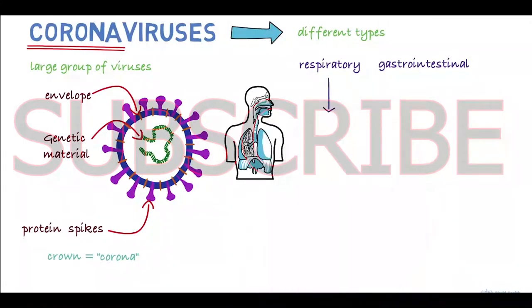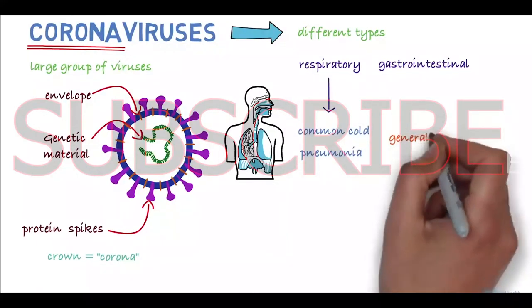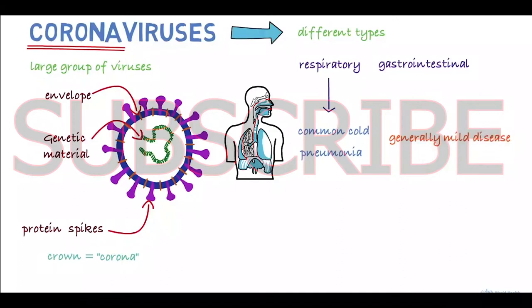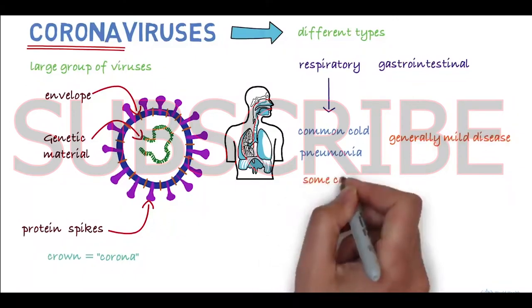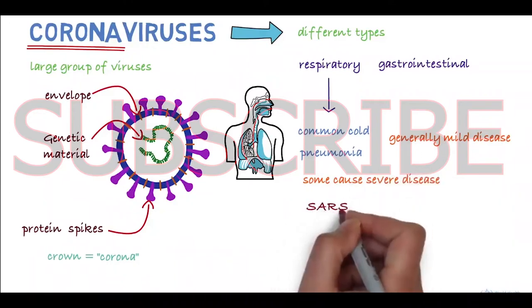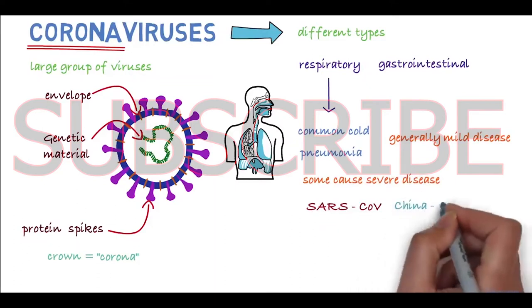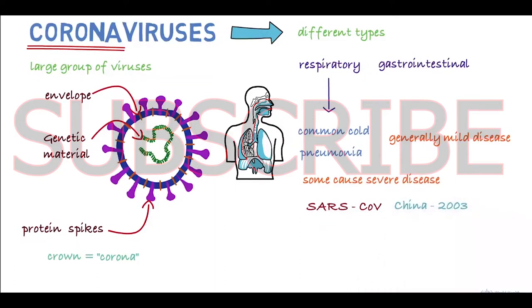Respiratory disease can range from the common cold to pneumonia, and in most people the symptoms tend to be mild. However, there are some types of coronaviruses that can cause severe disease. These include the severe acute respiratory syndrome coronavirus, first identified in China in 2003, and the Middle East respiratory syndrome coronavirus that was first identified in Saudi Arabia in 2012.